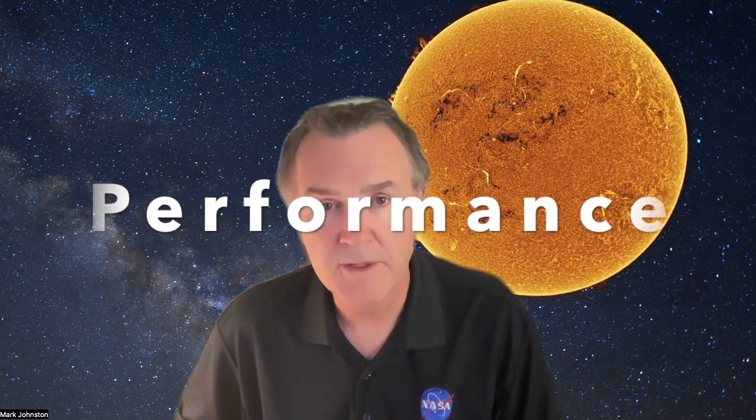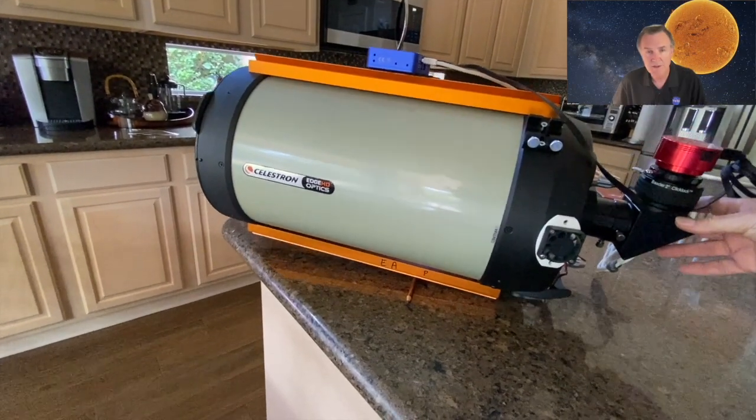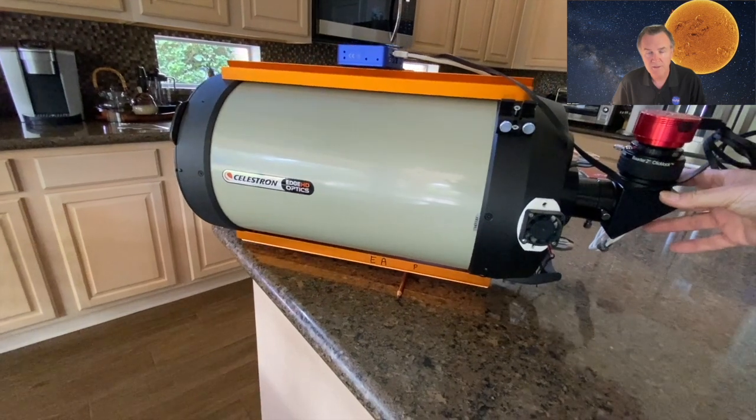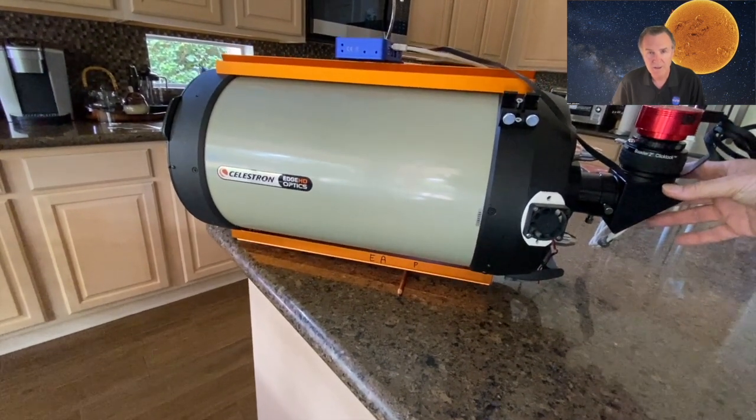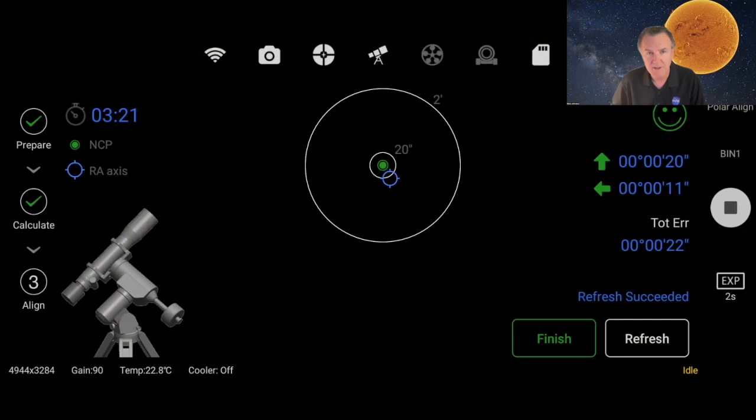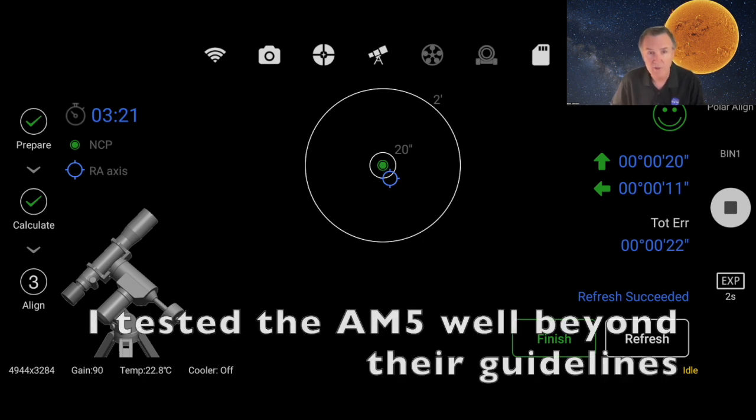Let's talk about the performance of the AM5. First of all, it's important to balance your scope properly on the mount. You can see here I'm using a pencil to check the balance on my Schmidt-Cassegrain telescope. Precise polar alignment requires PC software like SharpCap or NINA or else using the ASI Air. I use the ASI Air and I can polar align quickly.